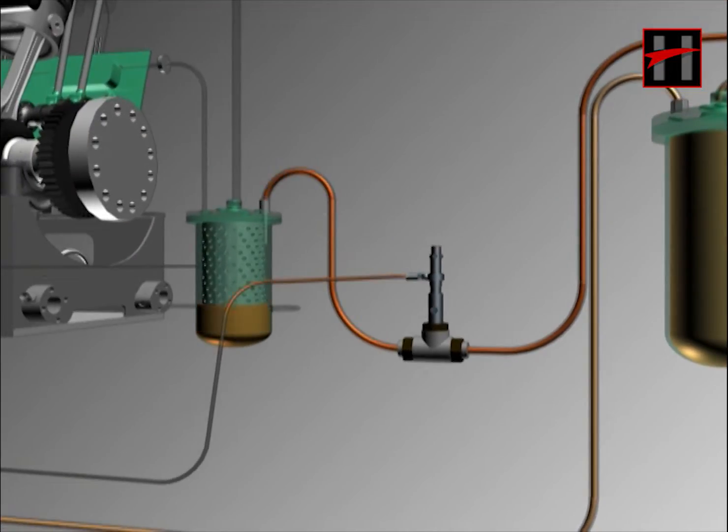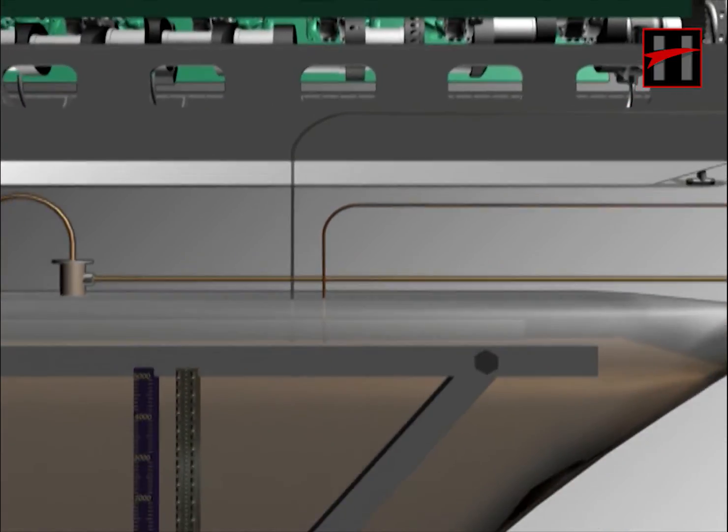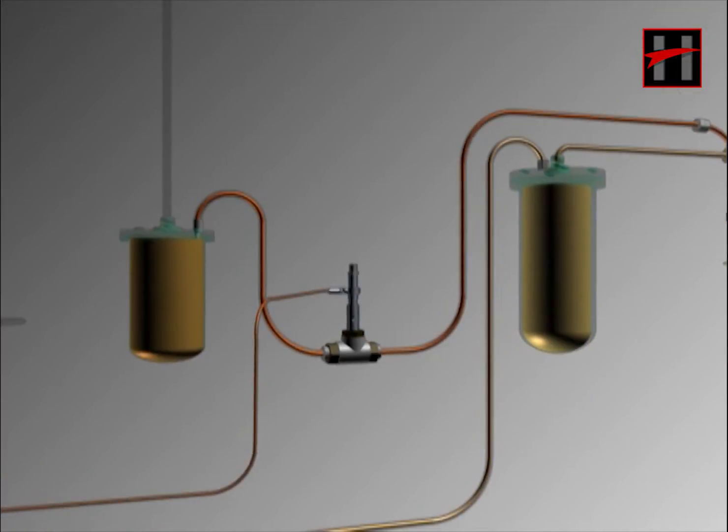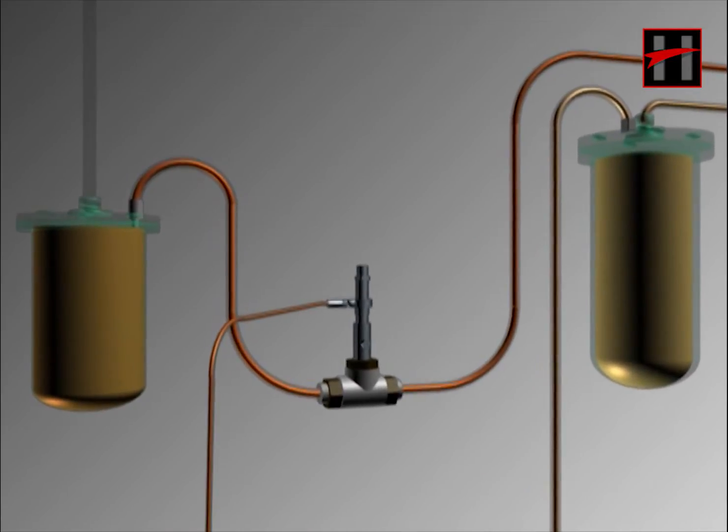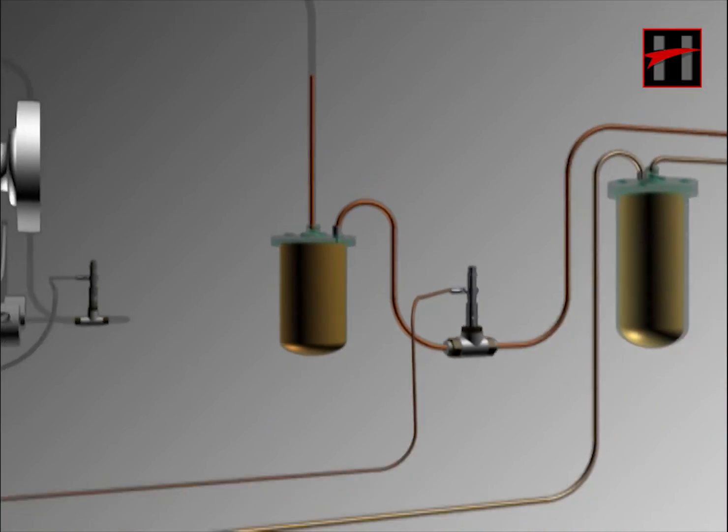The relief valve sends the extra fuel oil to the fuel tank through the return pipe. Fuel oil also gets filtered in the secondary filter. Note that both the primary and secondary filters are paper type filters. After passing through these filters, there's no impurity left in the fuel oil.